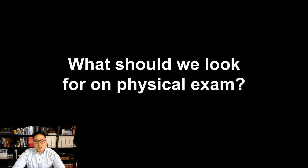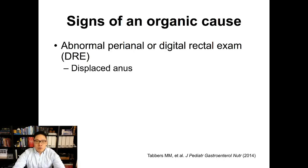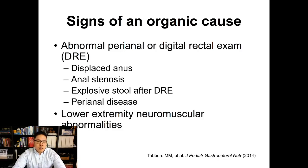On physical exam, a big part is ruling out signs of an organic cause. We look for abnormal perianal or digital rectal exam findings like a displaced anus or anal stenosis, or an explosive stool after a digital rectal exam suggesting a non-relaxing anal sphincter as seen in Hirschsprung's disease. Perianal disease may indicate Crohn's disease, and lower extremity neuromuscular abnormalities may point to spinal cord issues. An abnormal sacrum can be associated with anorectal malformation.